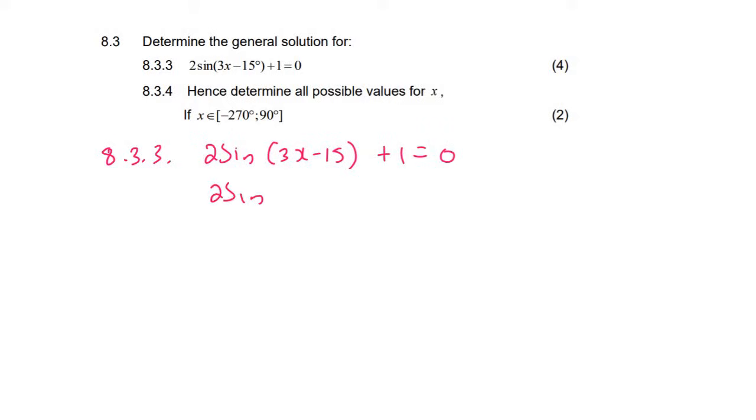So we've got 2 sin of 3x minus 15 plus 1 equals to 0. I'm going to take the plus 1 over, then I'm going to divide by 2.